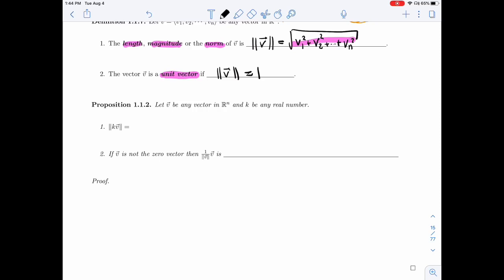I'm going to take V to be any vector in Rn and K be any real number. If I multiply K by V, I'm going to get a vector of length K times the length of V. Well, that's what it would be if K is positive, right?